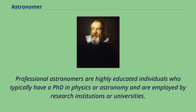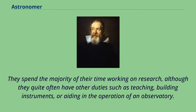Professional astronomers are highly educated individuals who typically have a PhD in physics or astronomy and are employed by research institutions or universities. They spend the majority of their time working on research, although they quite often have other duties such as teaching, building instruments, or aiding in the operation of an observatory.